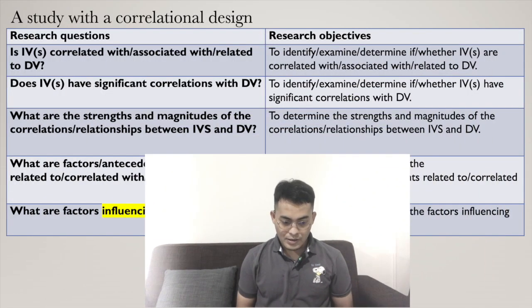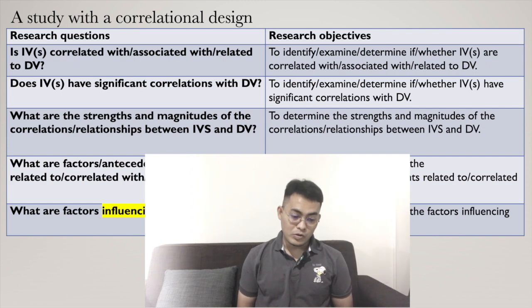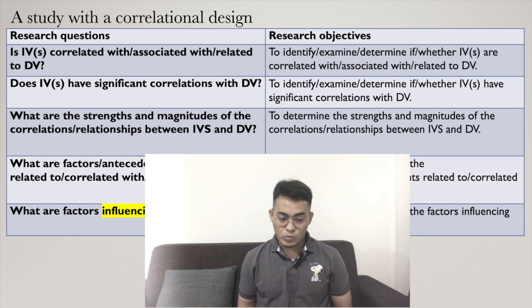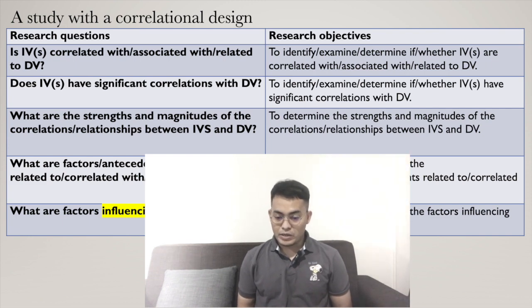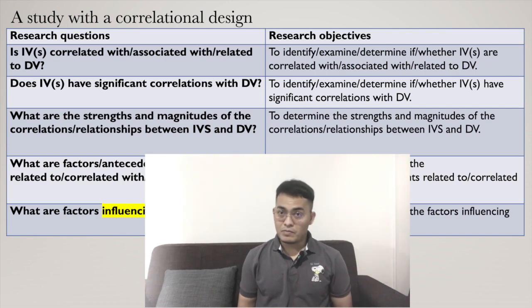First, a study with correlational design. The first research question is: is independent variable correlated with, or associated with, or related to dependent variable? Those are synonyms — you can use either correlated with, associated with, or related to. And the research objective is: to identify, to examine, to determine if or whether independent variable is correlated with, associated with, or related to dependent variable.